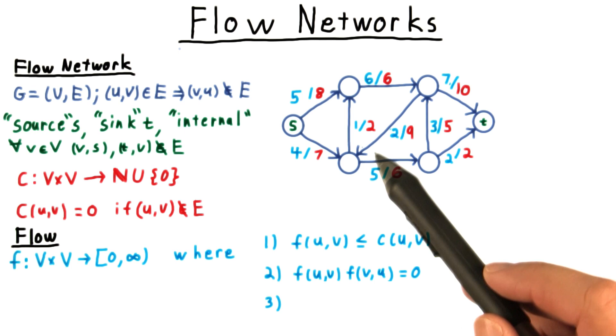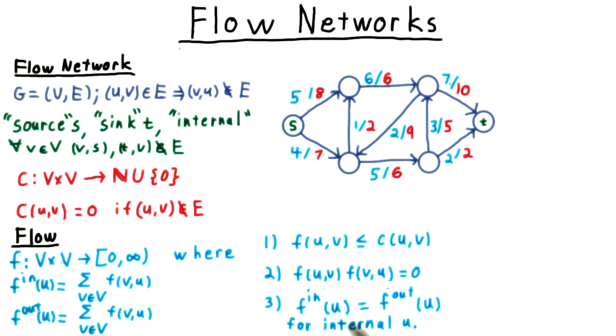Lastly, we require that flow be conserved at every internal vertex. We define f in to be the flow into a vertex, and f out to be the flow out. And we require that the two be equal.